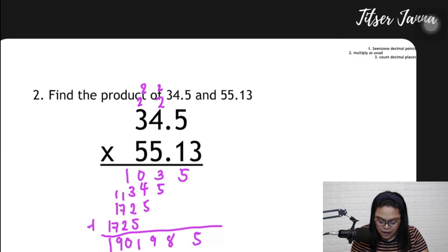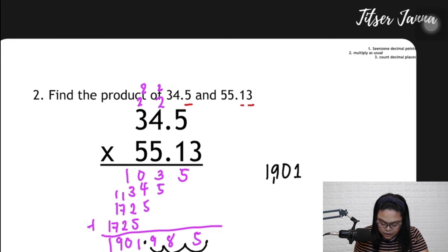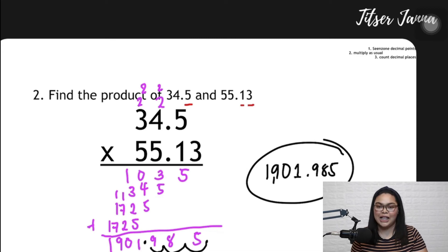Now, when we add up all these numbers already, we need to place the decimal point. Let's count their decimal places. One, two, three. So we have three decimal places. From the right, we move three times. One, two, three. So the answer is 1901.985. That is the correct answer.